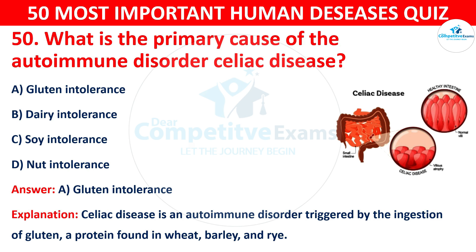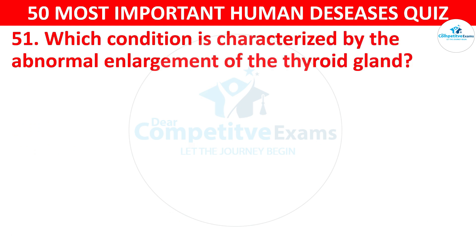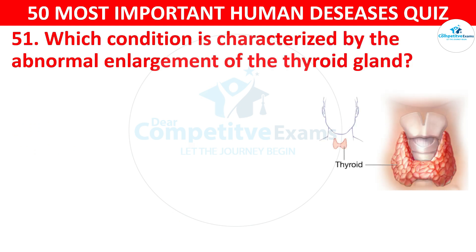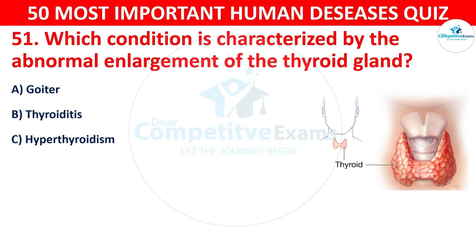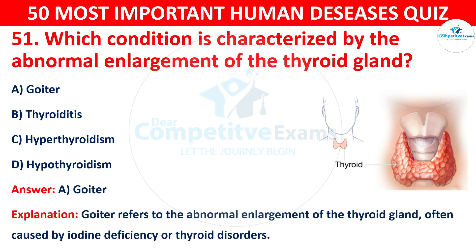Question 51: Which condition is characterized by the abnormal enlargement of the thyroid gland? Your options are: A) Goiter, B) Thyroiditis, C) Hyperthyroidism, or D) Hypothyroidism. The correct answer is A — goiter. Goiter refers to the abnormal enlargement of the thyroid gland, often caused by iodine deficiency or thyroid disorders.